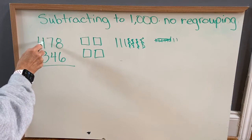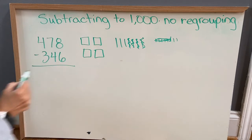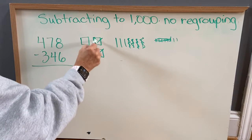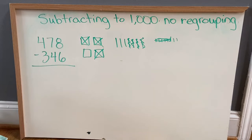And then four minus three, we have four hundreds. We're going to take three of those away. One, two, three. So let's see what we have left.